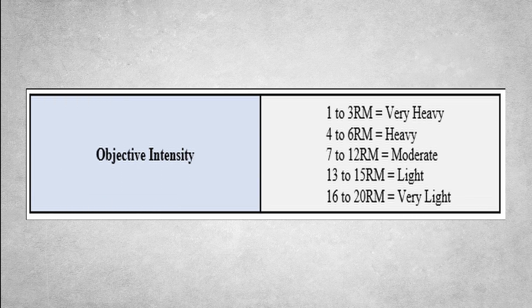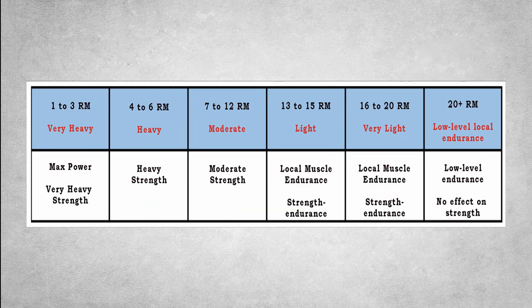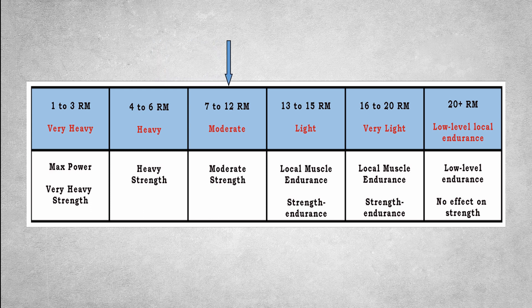Objective intensity just means that we're taking your feelings, emotions, and your rate of perceived exertion out of the equation. In other words, we're taking any subjectivity out of the equation and we're just looking at the load that you're lifting. So in the one to three repetition range, it's considered very heavy weight because it's the heaviest weight you could possibly lift. If you can lift the weight four to six times, then objectively it's considered heavy weight. In the seven to twelve repetition range it's considered moderate. The thirteen to fifteen repetition range is considered lightweight. And the sixteen to twenty repetition range is considered very lightweight.